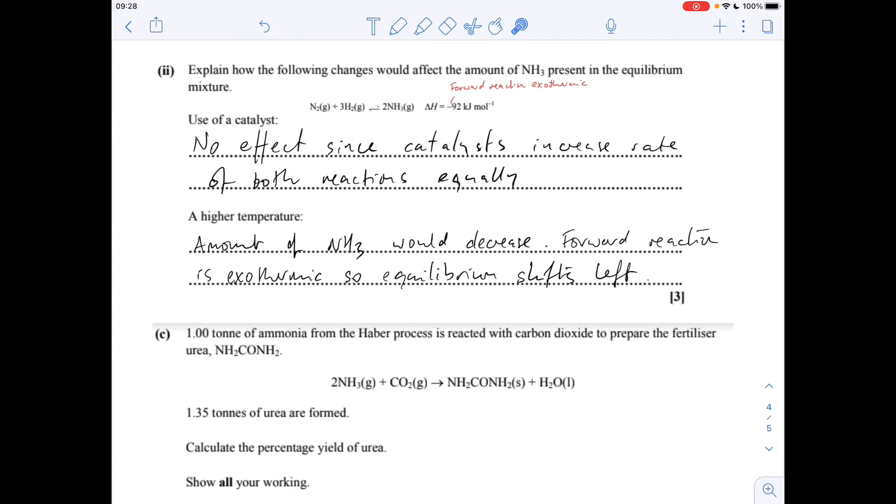The next part of the question, we've got to use Le Chatelier's principle to explain how the use of a catalyst and a higher temperature would affect the amount of ammonia present in the equilibrium mixture. Use of a catalyst, that's going to have no effect on the amount of ammonia, because catalysts don't change the position of an equilibrium. They just increase the rates of both reactions equally. The higher temperature, remember that forward reaction is exothermic, so a higher temperature is going to favour the reverse endothermic reaction. So that amount of ammonia is going to drop.